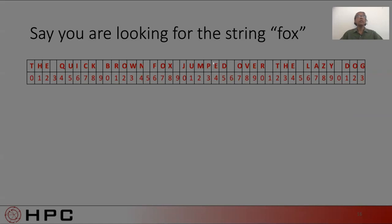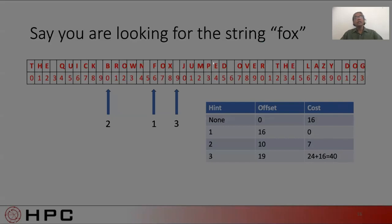Expert zero tells us to start searching at 16. Expert two tells us to start searching at position 10. And expert three tells us to start searching at position 19. How does this affect scan length and the cost of the search?